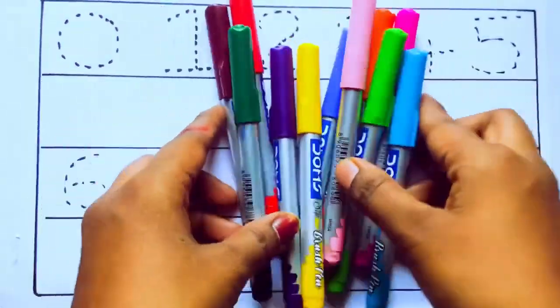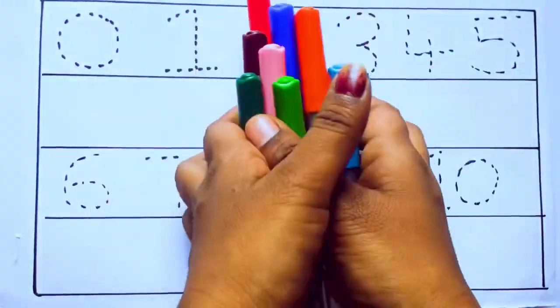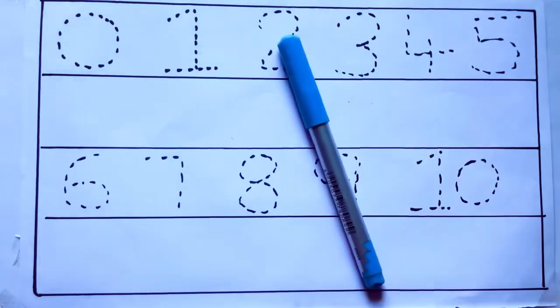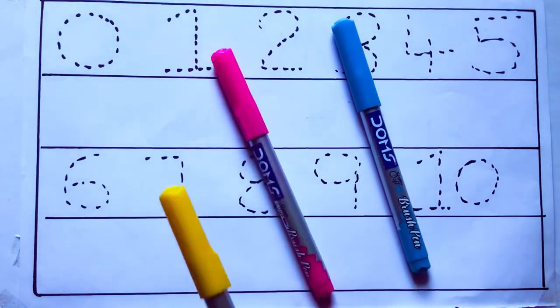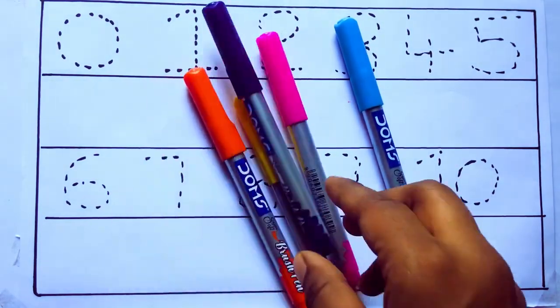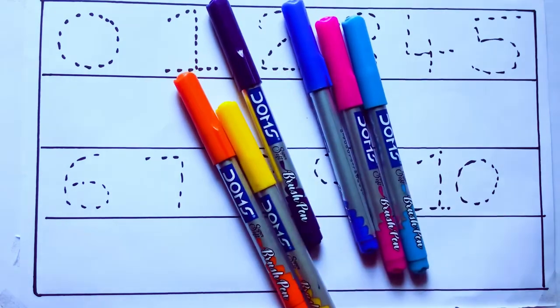Let's learn some colors. These are all the color pencils. Let's learn the names. Sky blue color, pink color, yellow color, orange color, violet color, blue color.